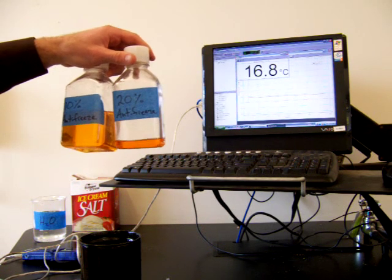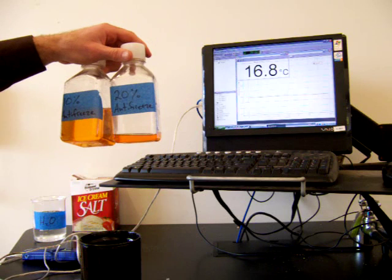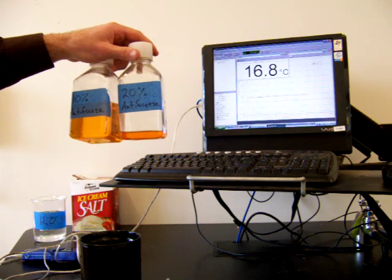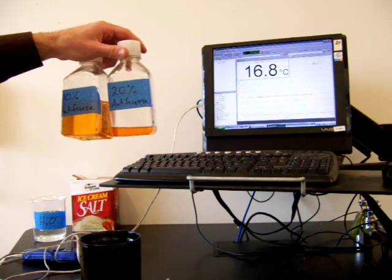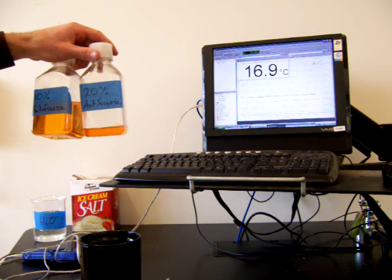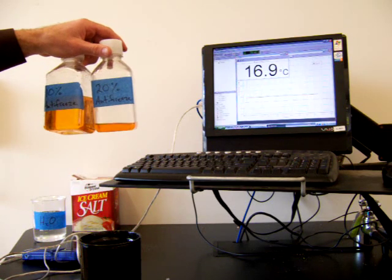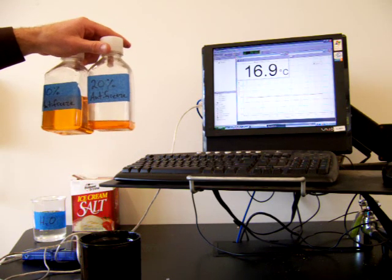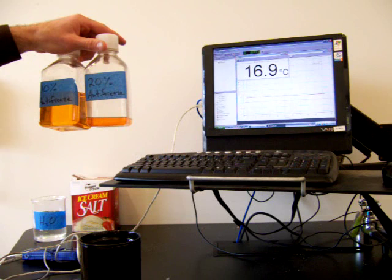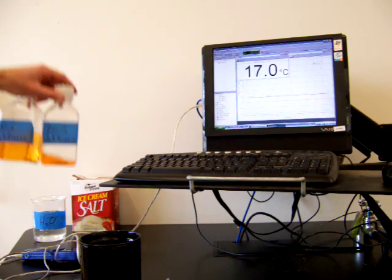And then I have a 20% antifreeze solution which is made by dissolving 20 grams of antifreeze in 80 grams of water. We're going to look at the freezing point of these two solutions and compare them to the freezing point of pure water and use that information to determine the molar mass of antifreeze.